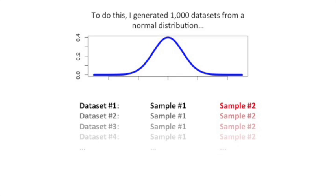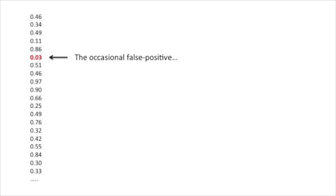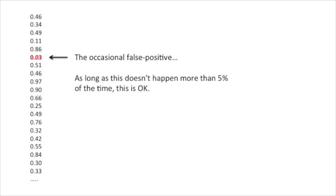Here we see what the t-test thinks happened. It thinks that the samples came from two separate distributions instead of one distribution. This is how you get a false positive sometimes. I want to focus on the samples that have p-values barely greater than 0.05. To do this, I generated 1,000 datasets from a normal distribution, and then I performed t-tests on each dataset. Here we see the first 20 p-values — there were 980 more — and we see that I got the occasional false positive. As long as this doesn't happen more than 5% of the time, this is okay.